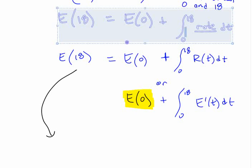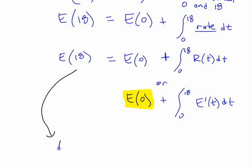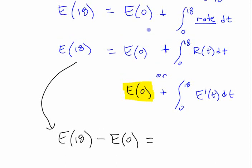If we rearrange that, if we put the E of 0 on the other side, what do we get? We get E at 18 minus E of 0, E of 18 minus E of 0, right?